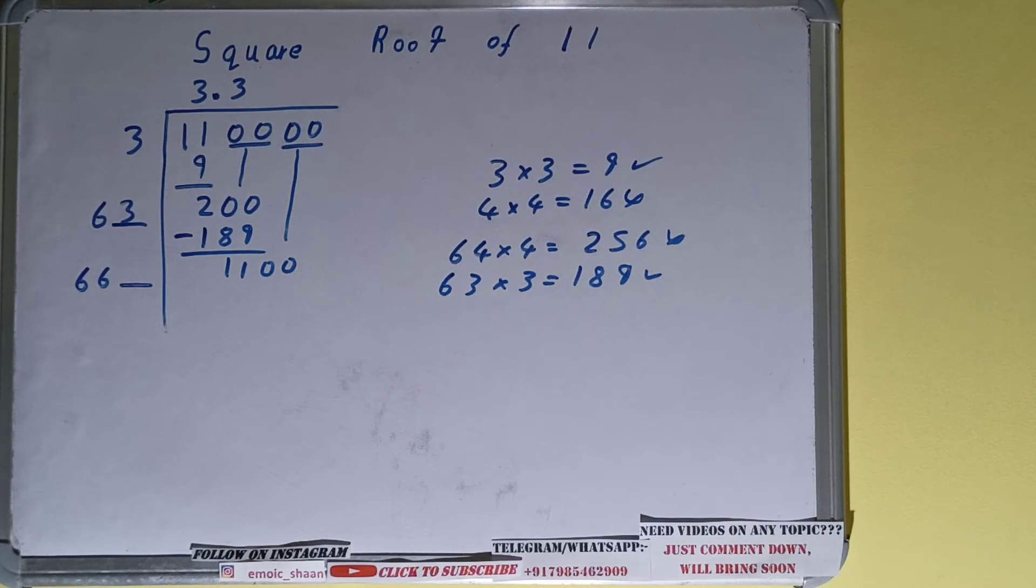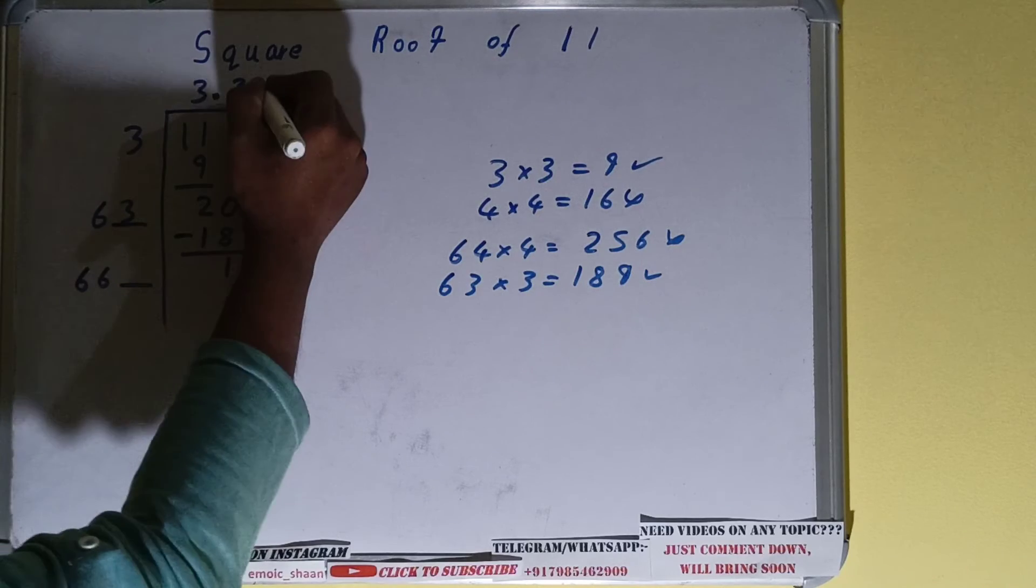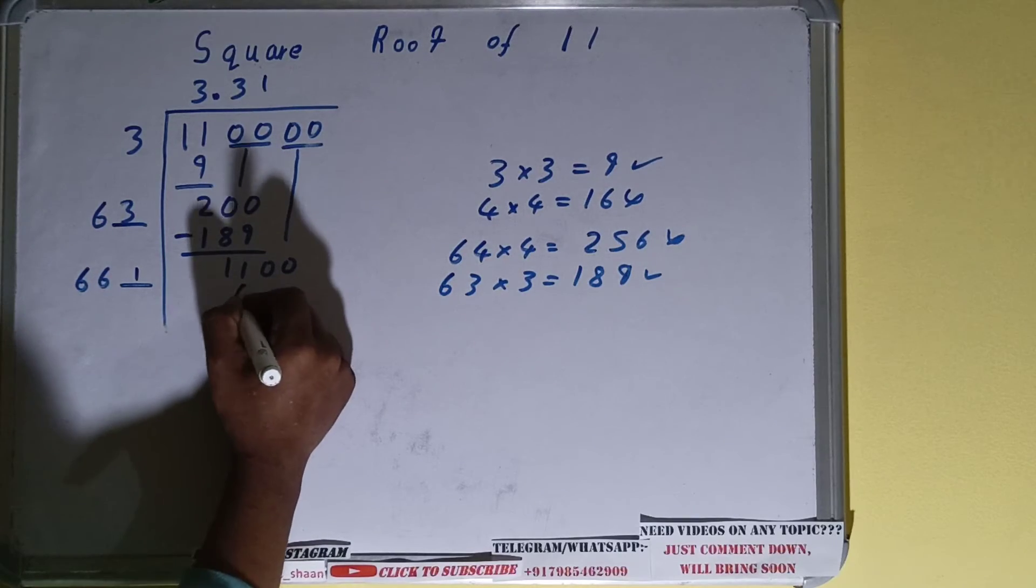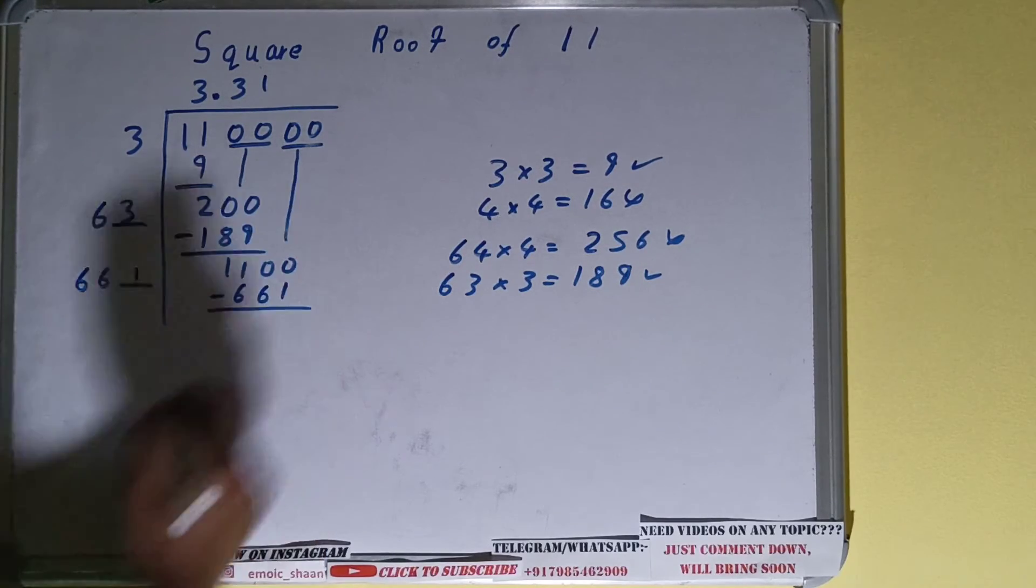We can clearly see if we take 2 here it will be greater than 1100, because 662 into 2 is 1324. We cannot take 2, so let's take 1. If we take 1, we'll have 661. Just subtract and we'll have 439.